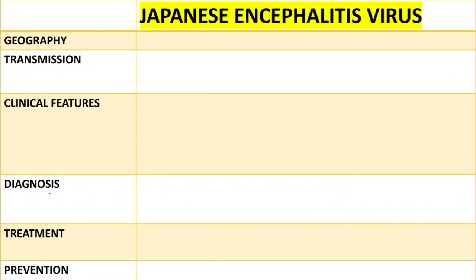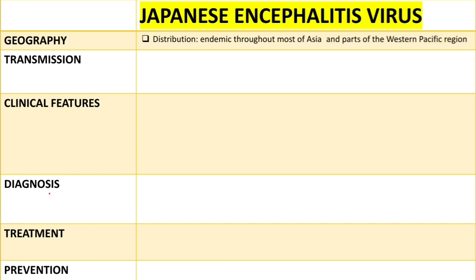In terms of geographical distribution, the Japanese encephalitis virus is endemic throughout most of Asia and parts of the western Pacific region.